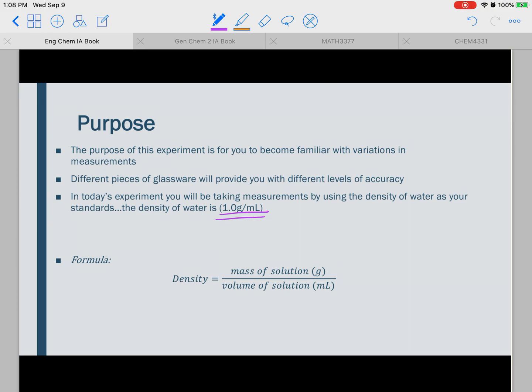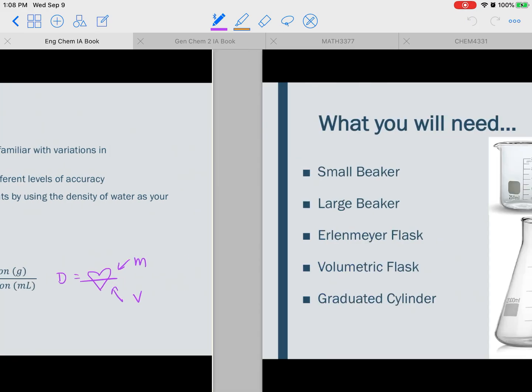The formula for density is right here, and that is just the mass of solution in grams over the volume of solution in milliliters. A nice way I like to memorize this is just that D for density equals, and you can draw a heart, cut the heart in half, the top looks like an M, the bottom looks like a V for volume, so mass and volume.